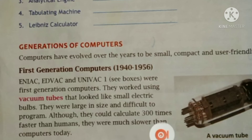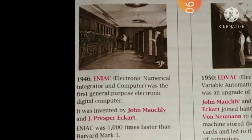These are all first generation computers. These computers worked using vacuum tubes that look like a small electric bulb. You can see the vacuum tube image on the right-hand side. They were large in size and difficult to program. Although they could calculate 300 times faster than human beings, they were much slower than computers of today. Come to page number 5 — you can see the images of ENIAC and EDVAC given there.